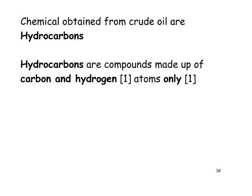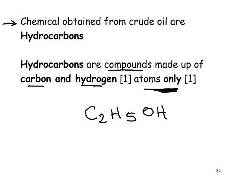The chemicals obtained from crude oil are hydrocarbons — compounds made up of the elements carbon and hydrogen only. It's very important to say 'only'. Ethanol, for example, is not a hydrocarbon because it also contains oxygen.